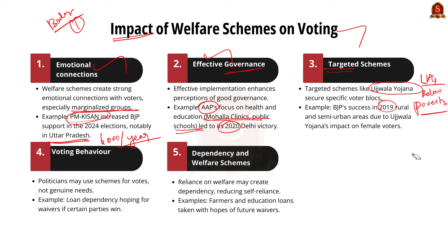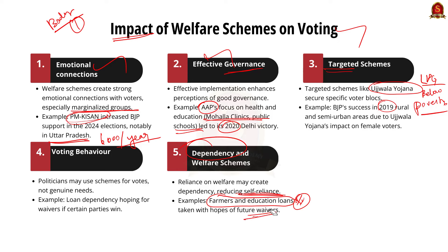This suggests that politicians may use welfare schemes for political gain, manipulating them to secure votes rather than implementing them based on genuine developmental needs. Finally, prolonged reliance on welfare may foster a culture of dependency, discouraging self-reliance and individual initiative among recipients. For example, a farmer might take an excessive loan with the hope that it will be waived off if a particular party comes to power. A similar thing happens with education loans.